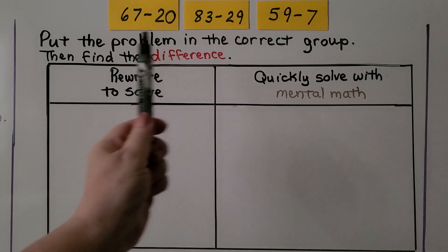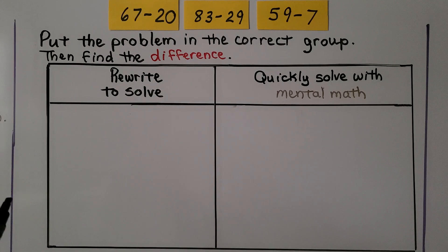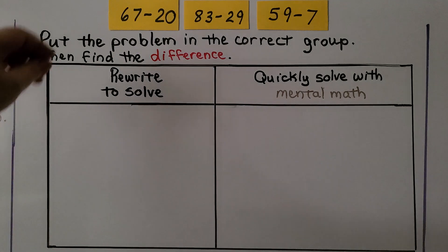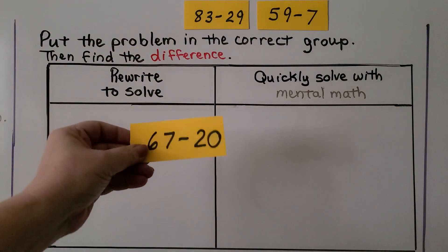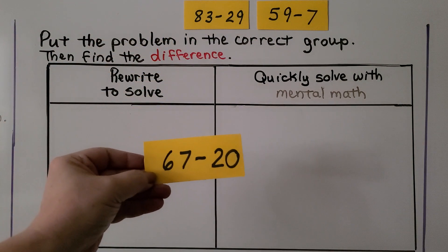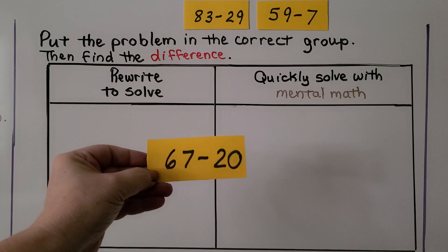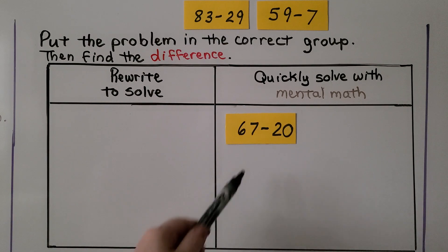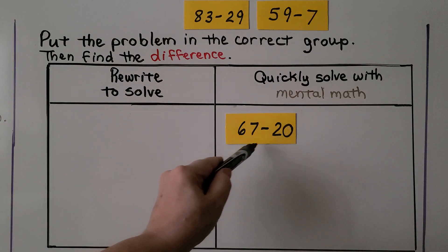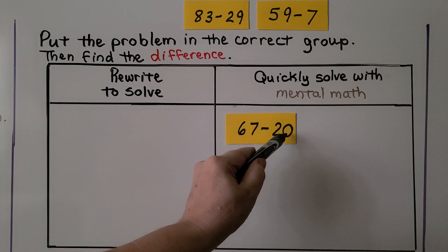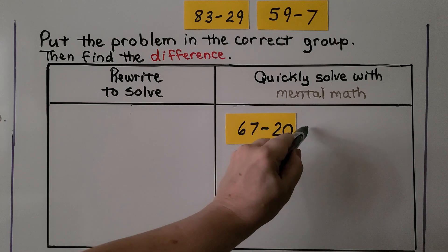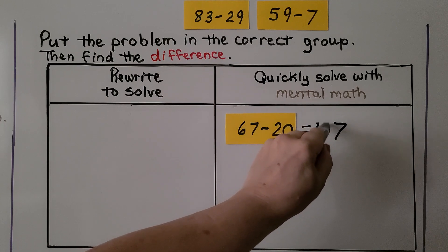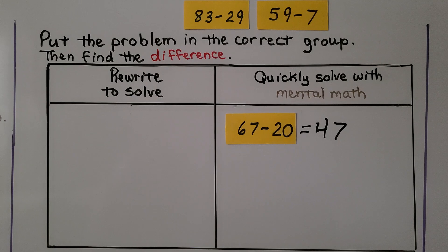Here we have three subtraction problems. It says to put each problem in the correct group: rewrite to solve, or quickly solve with mental math. The first one — would we need to rewrite it, or could we solve it with mental math? If you said mental math, you're right. We're just taking away two tens from six tens. We take zero ones from seven ones, so we still have seven ones. Two tens from six tens is four tens. It's equal to 47.